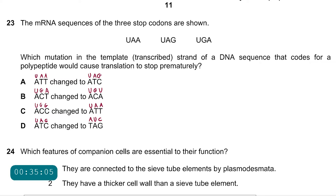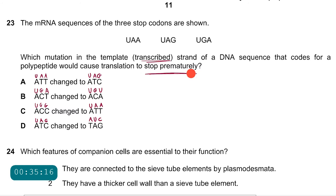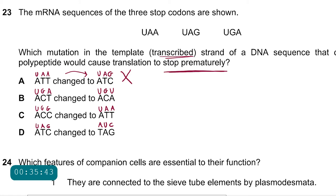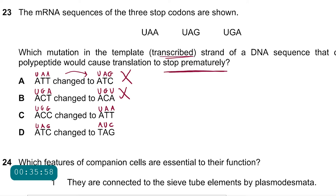Question 23: the mRNA sequences of the three stop codons are shown. Which mutation in the template strand would cause translation to stop prematurely? A — UAA changed to UAG: both are stop codons, so no difference — incorrect. B — UGA converted to UGU: UGU is not a stop codon, so translation would not stop — incorrect. C — UGG changed to UAA: UAA is a stop codon, so translation would stop prematurely — correct. D — UAG changed to AUC: AUC is not a stop codon — incorrect. Answer is C.